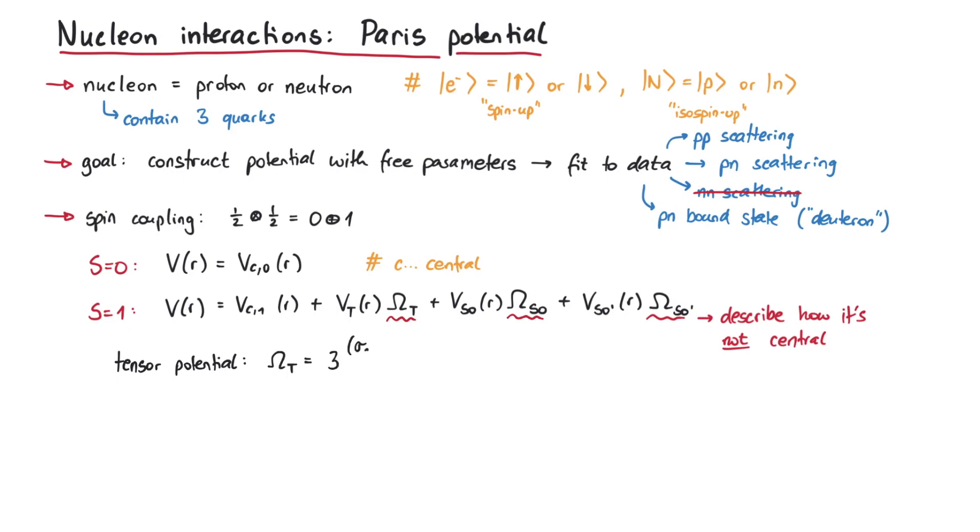First, the index t stands for tensor potential, and omega t looks like this. Here, the sigmas denote Pauli matrices, such that the spin of a spin-1/2 particle can be written as h-bar over 2 times a Pauli matrix. Next, the index 1 and 2 denote whether the operator acts on the first or the second nucleon.